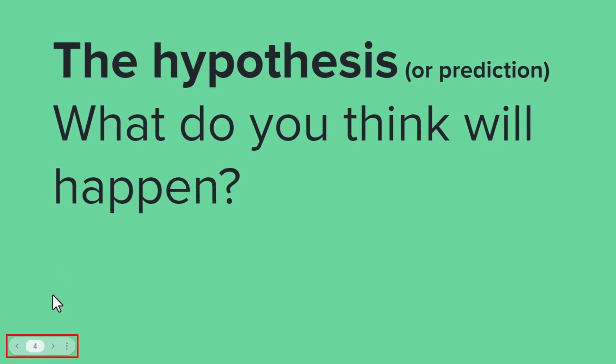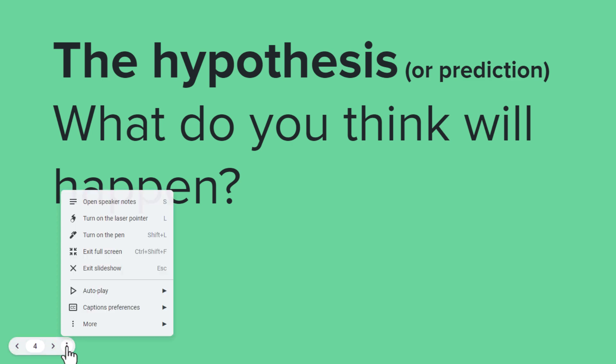It says that I'm on slide 4 and it's got back and forth arrows. I could scroll through my slideshow presentation using those arrows, or I could click on this three dot hamburger menu and that brings up some more options.